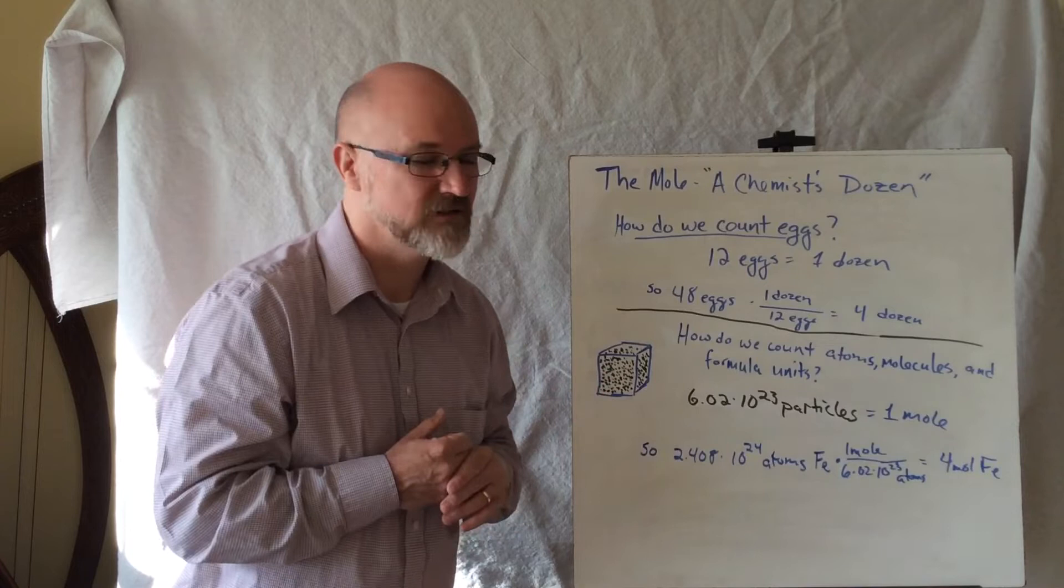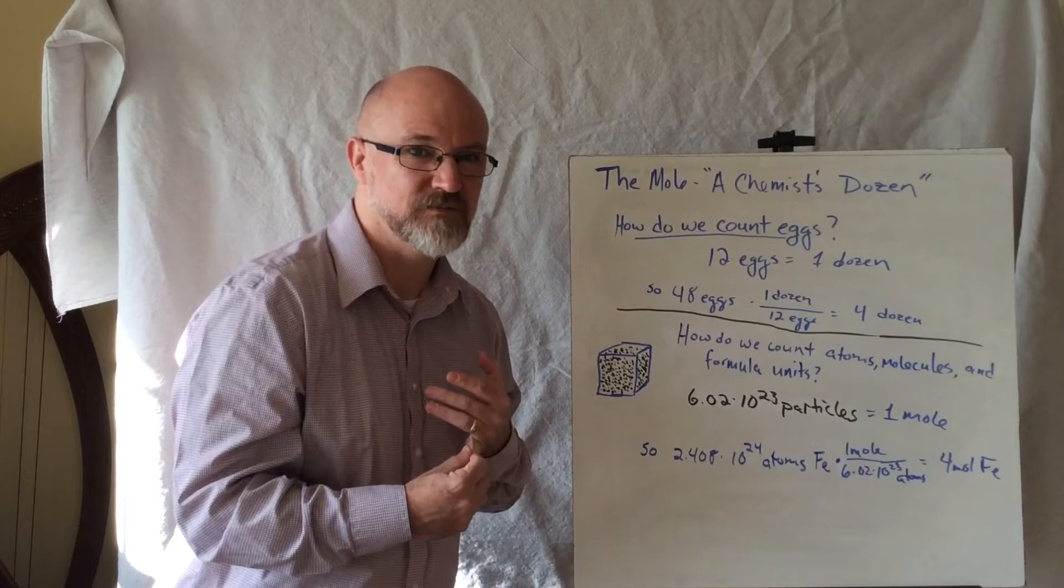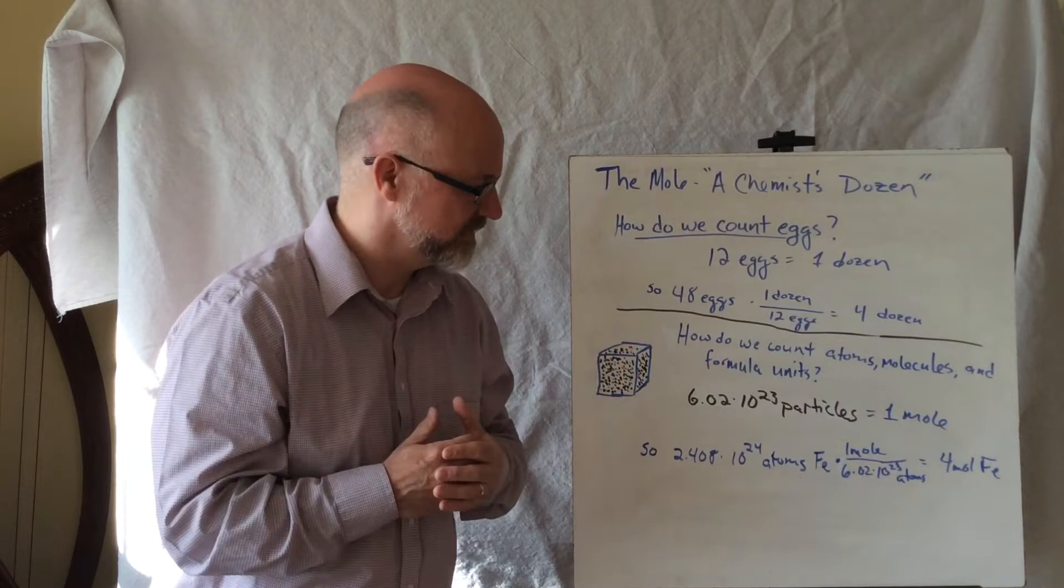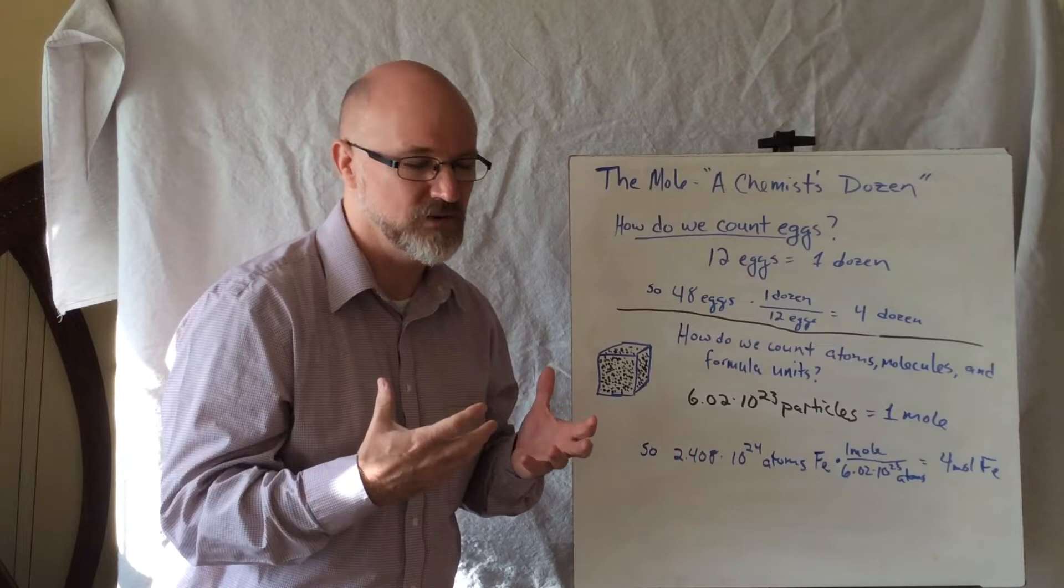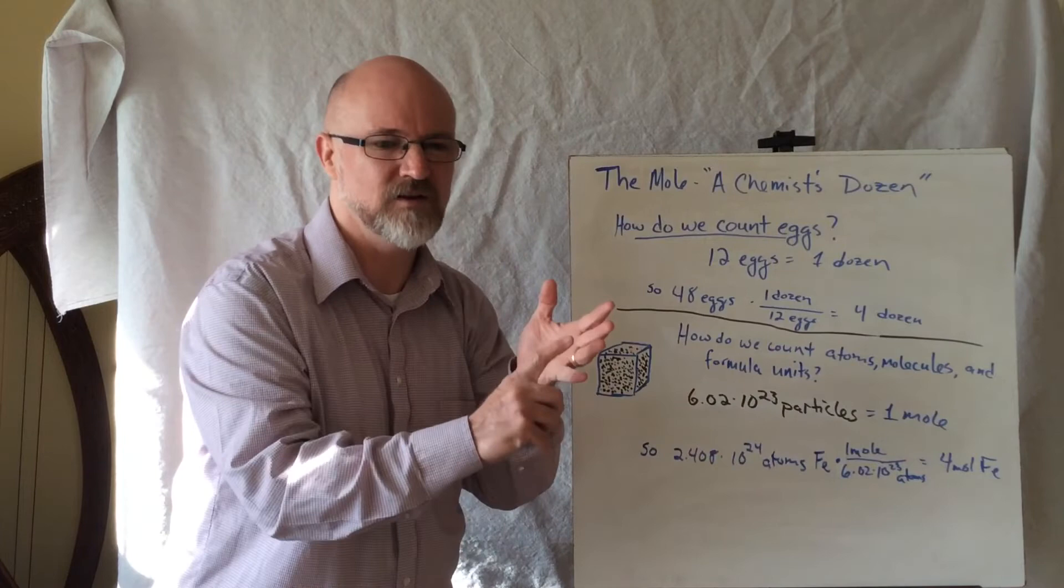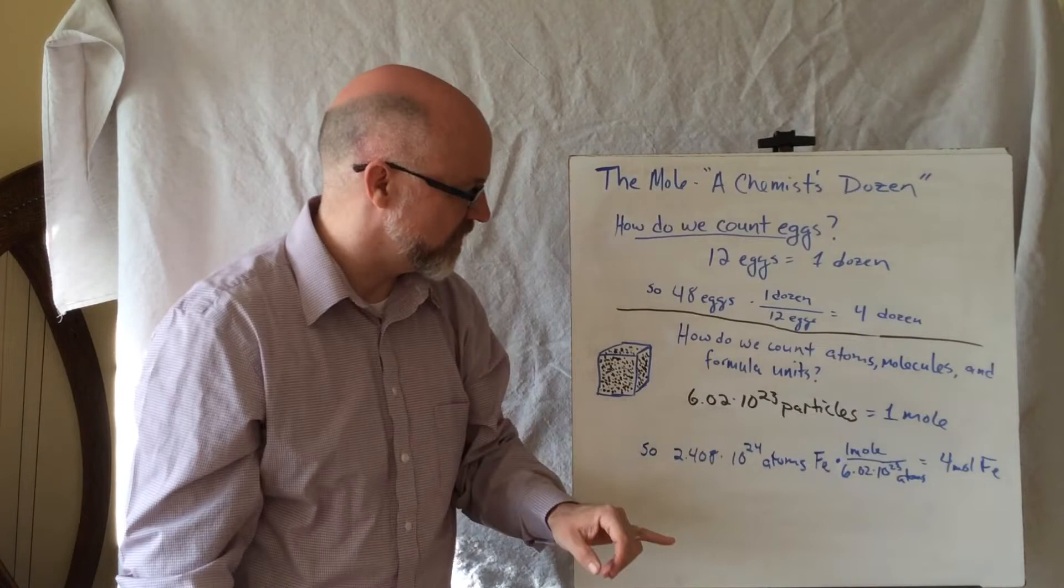And why mole? We're not talking about something that's going to eat your vegetables in your garden, not talking about a spy, not talking about something you want to see the dermatologist to take care of. We're talking about a way of counting particles. It's probably a truncated or abbreviated version of the word molecule. So if this is our number, just like 12 is our conversion number for a dozen, 6.02×10²³ is our conversion. Whether we're talking about atoms or molecules or formula units of an ionic compound, it's always one mole.